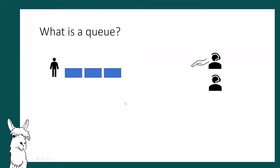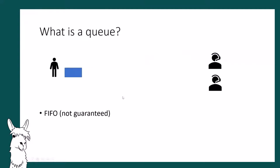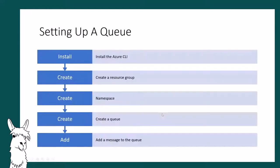Let's talk about queues. A queue is a set of messages, and broadly the messages are dealt with on a first-in-first-out basis, although that's not guaranteed on Service Bus. You can have zero, one, or more receivers. To set up a queue, you'd install the Azure CLI, create a resource group, a namespace, then the queue, and add a message to the queue.